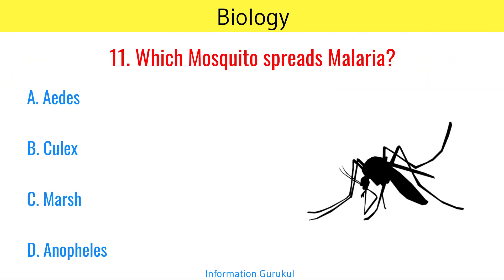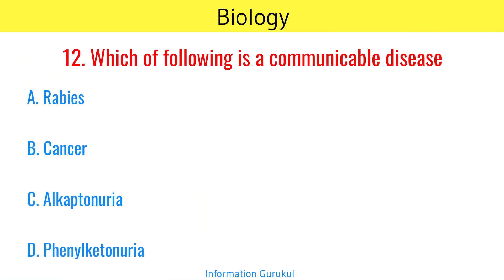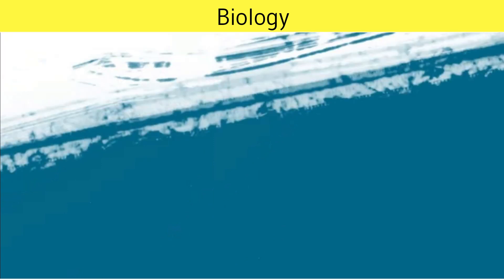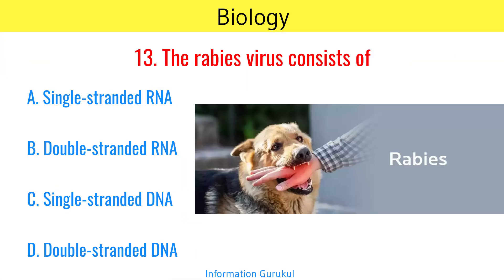Which mosquito spreads malaria? Anopheles. Which of the following is a communicable disease? Rabies. The rabies virus consists of Single-stranded RNA.